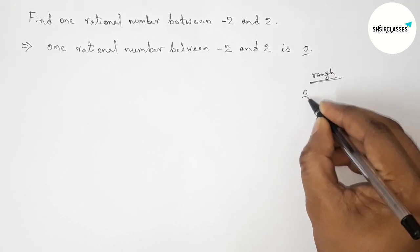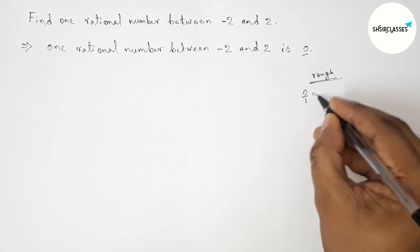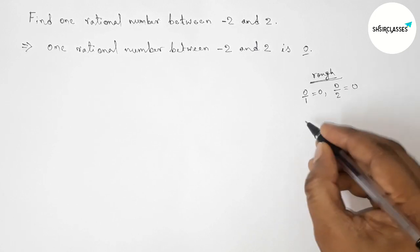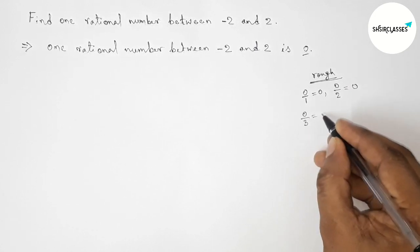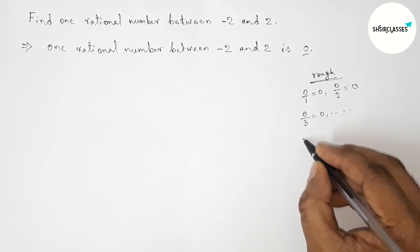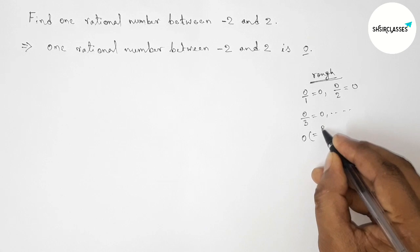as p by q form. So 0/1 equals 0, also we can write 0/2 which is also 0, 0/3 is also 0, and so on. So here we can express 0